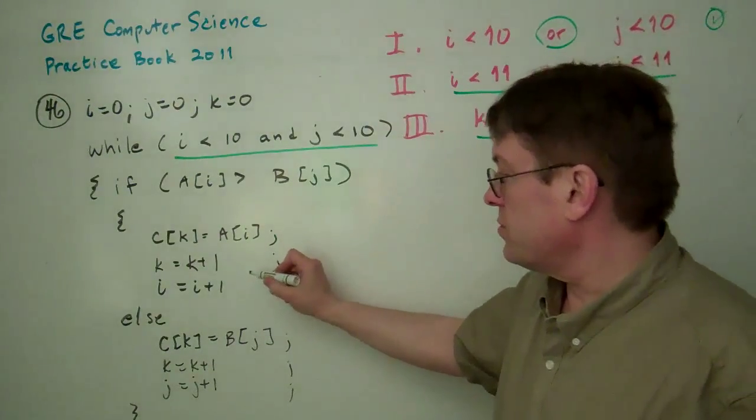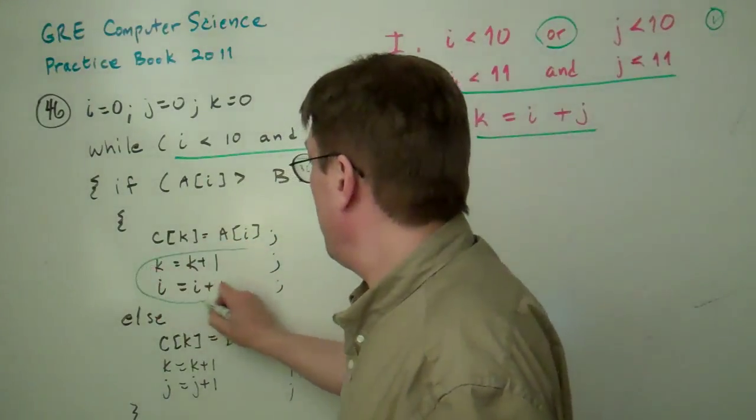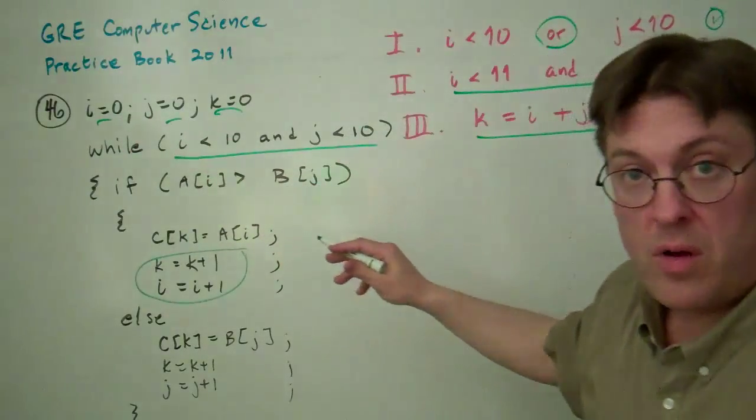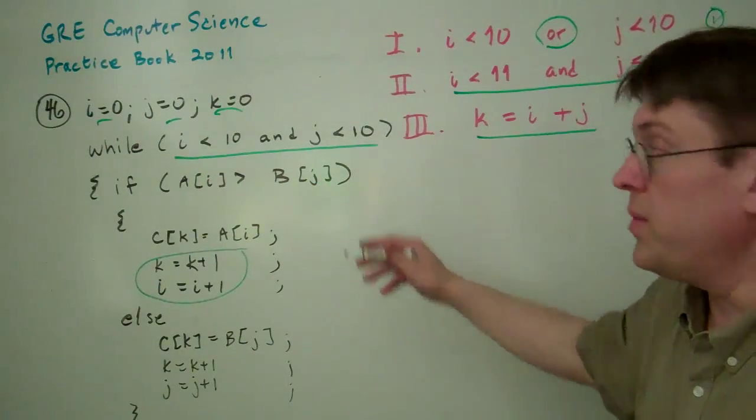Now, you'll notice that K and I and J all start off as zero. So they're equal at the beginning.